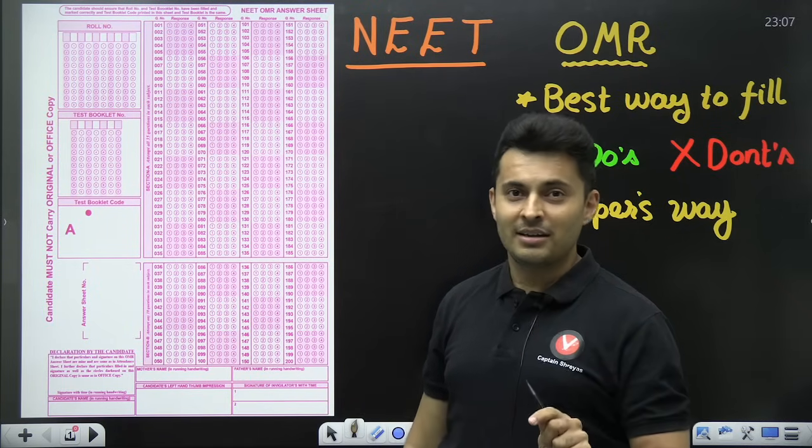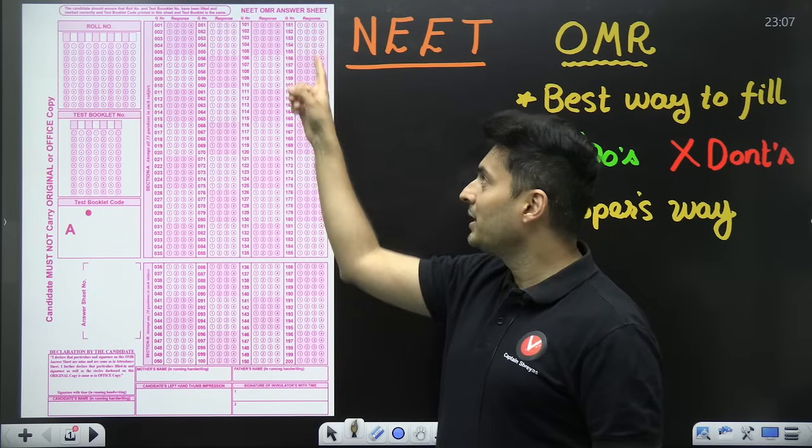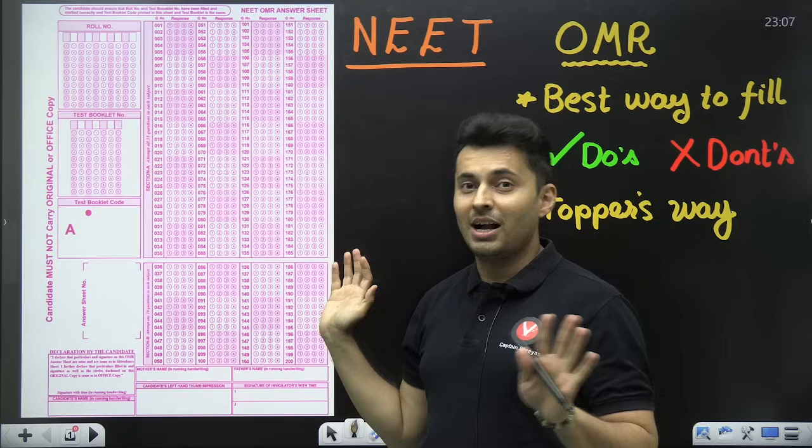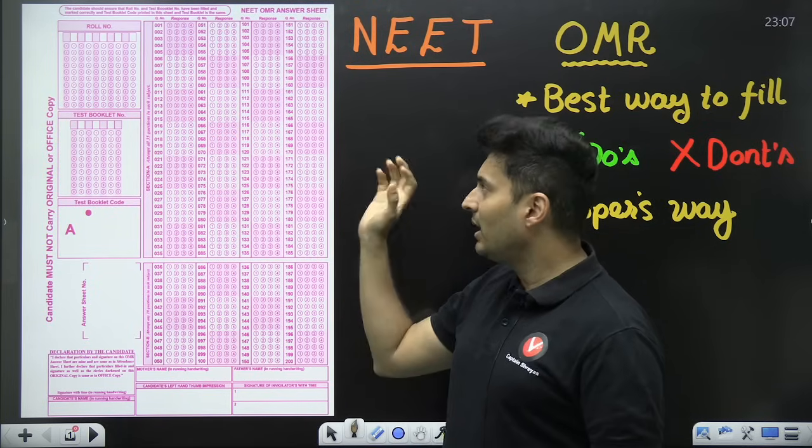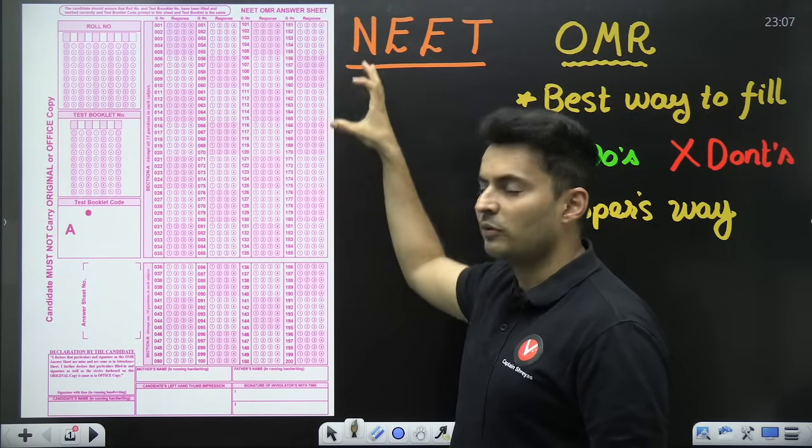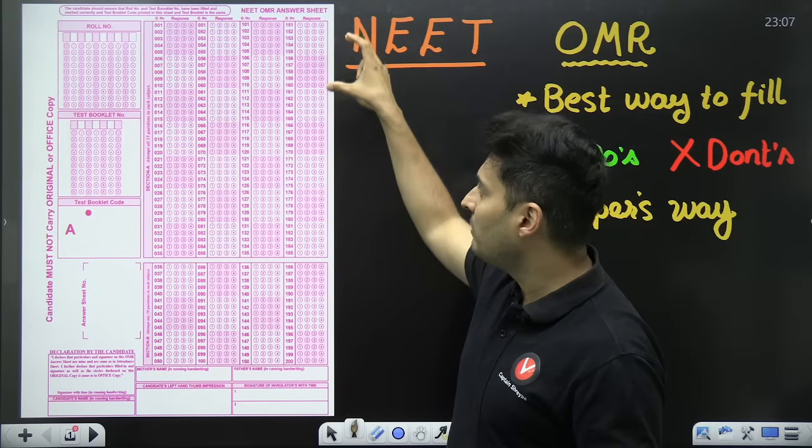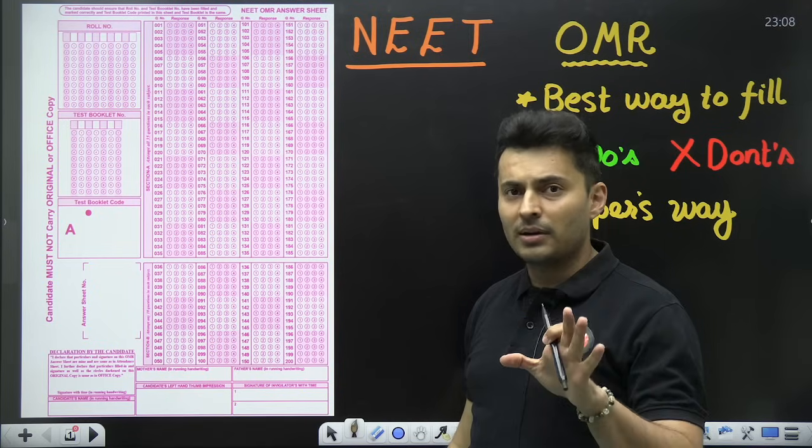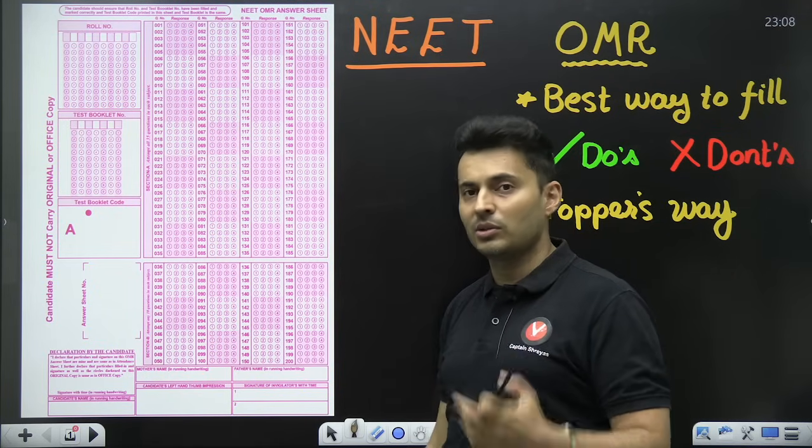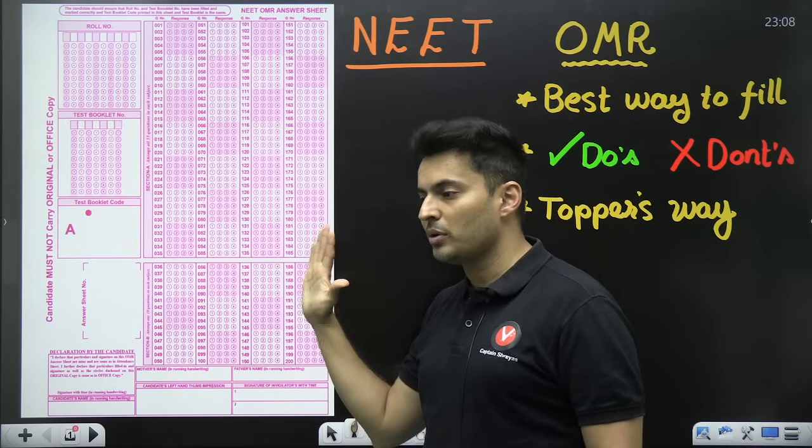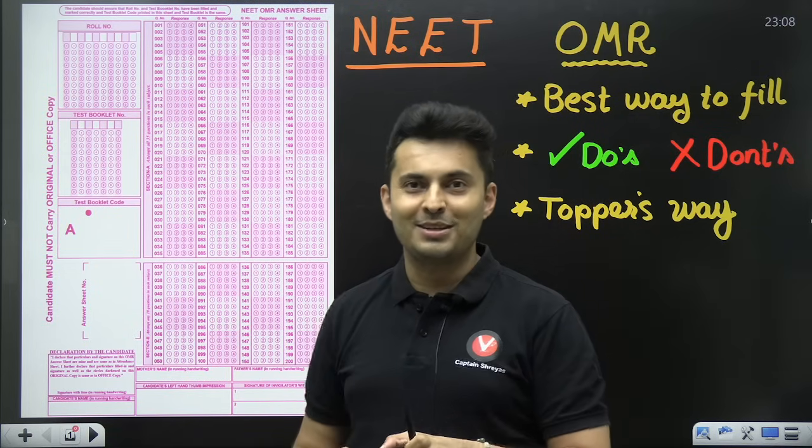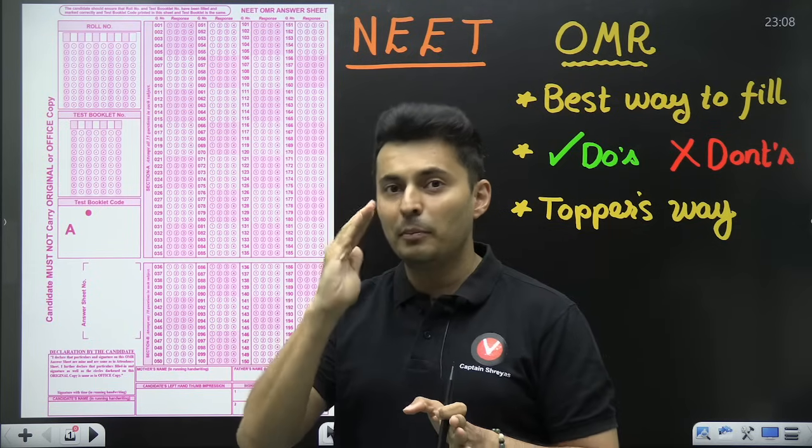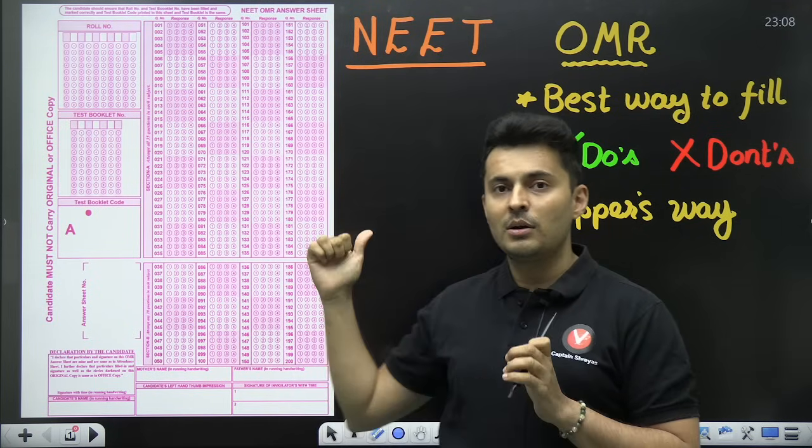But keep in mind for the last subject, don't keep all the bubbling part towards the end because chances are again the paper might get snatched off. So for the last part, solve in groups of five or ten. After every five to ten questions you can bubble it. That way you are assured that even if something goes wrong, max to max five to ten questions might be only lost, not the entire subject or the entire NEET paper. Got it? So that is the best optimum strategy for bubbling.